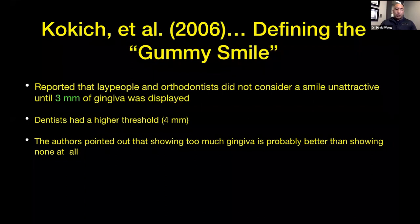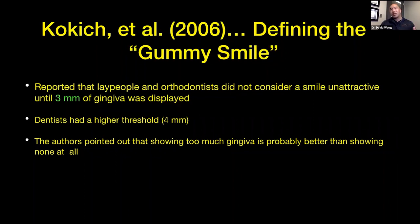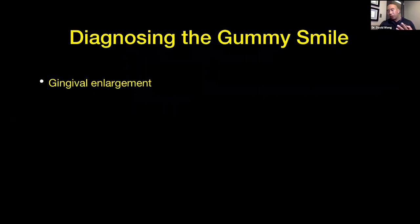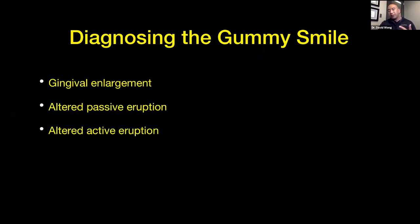Generally speaking, when looking at photos of people, we'd rather people show too much gum tissue than none at all — showing none at all is more a sign of aging. When we look at the gummy smile, there are four things we look at: gingival enlargement, altered passive eruption, altered active eruption, and vertical maxillary excess.